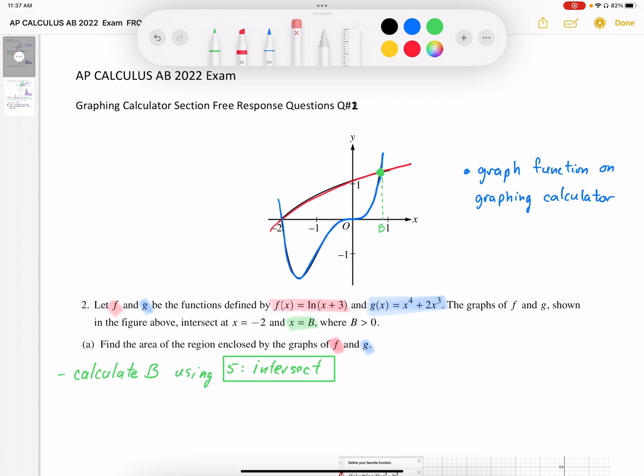Using that intersect function, we should get the value of b is equal to 0.7819754. So that's going to be the value of b.